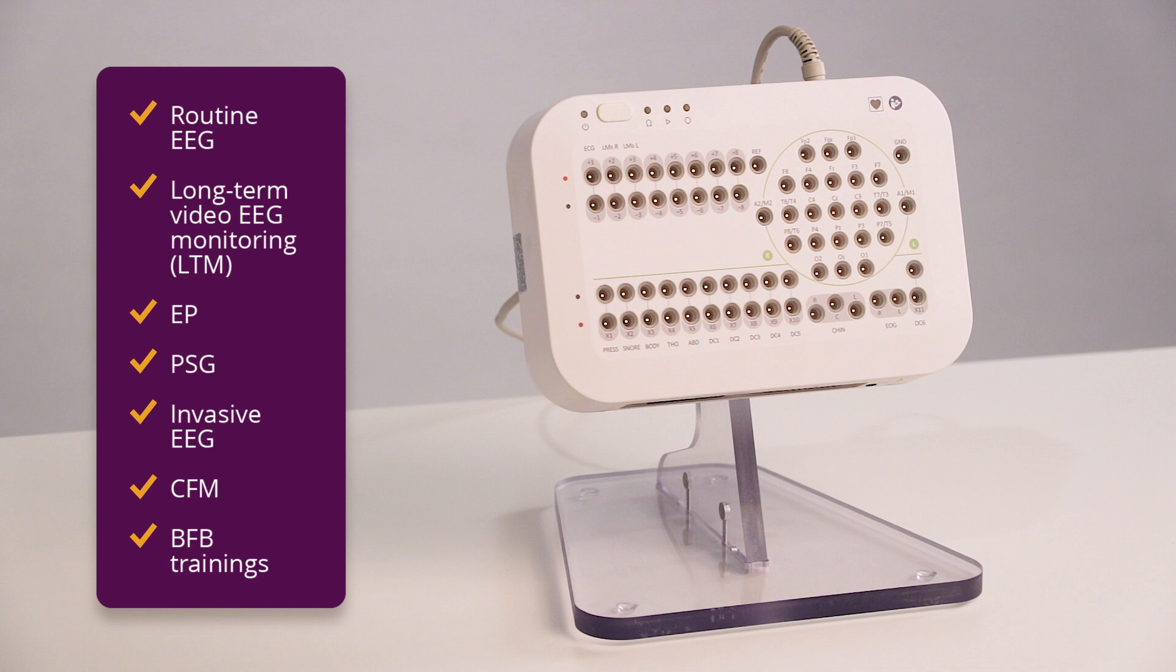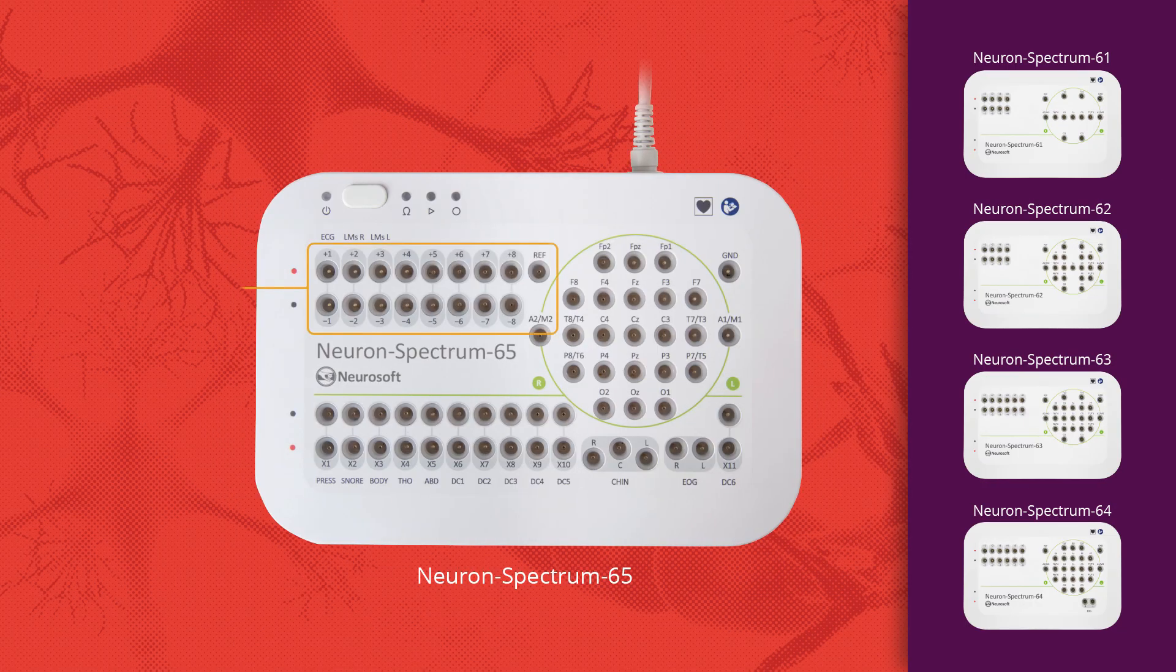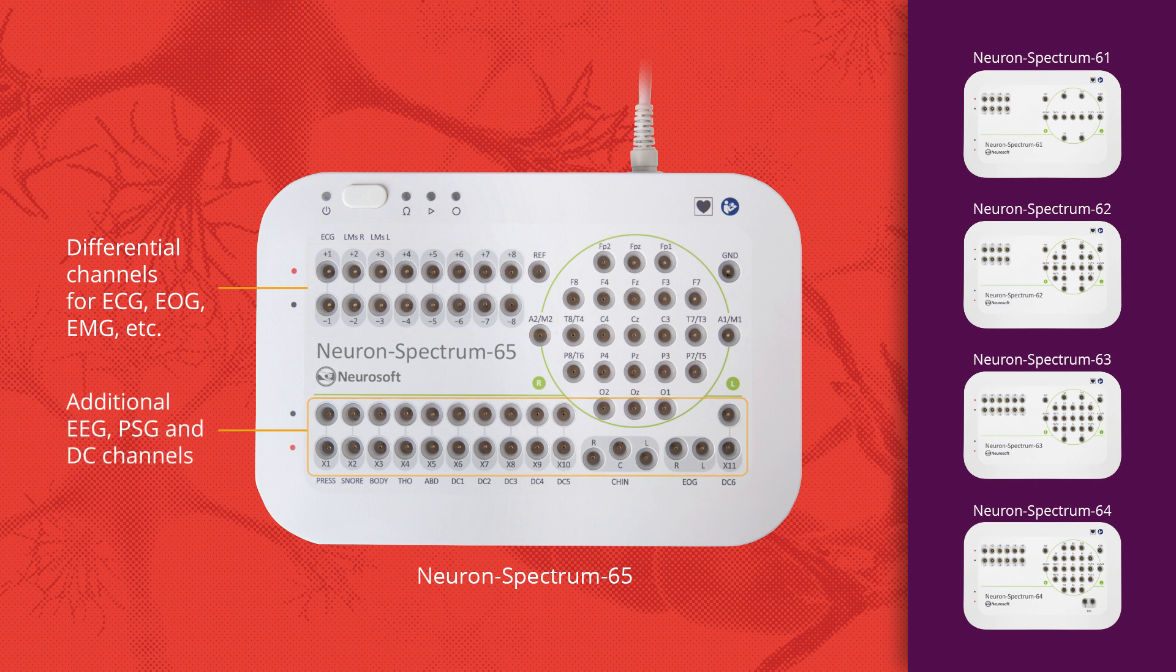Any thinkable EEG related task is possible with the 6th generation of Neurospectrum EEG systems. Each monitoring unit has a number of EEG channels and additional differential channels for ECG, EOG, and EMG recording.